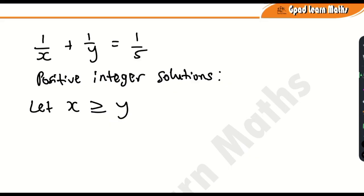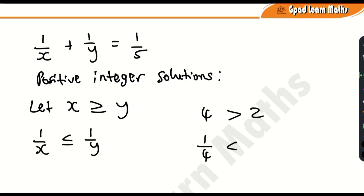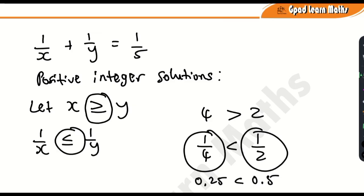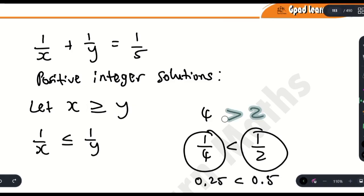If x is greater than or equal to y, what would you say about 1/x? It's going to be less than or equal to 1/y. Here's why: 4 is obviously greater than 2, but 1/4 becomes less than 1/2, because 1/4 is 0.25 and 1/2 is 0.5. So 0.25 is clearly less than 0.5. That's why we change the inequality from greater than or equal to, to less than or equal to.